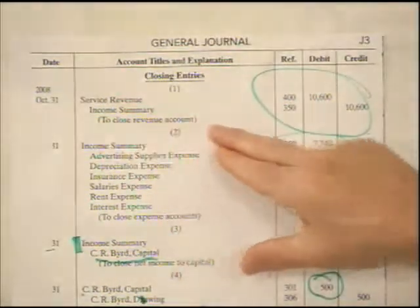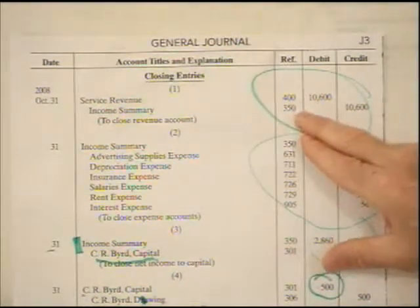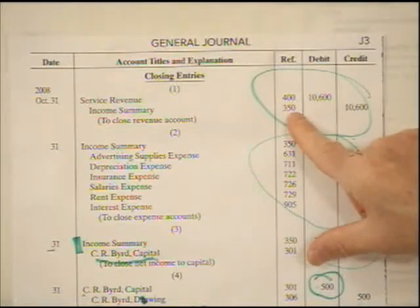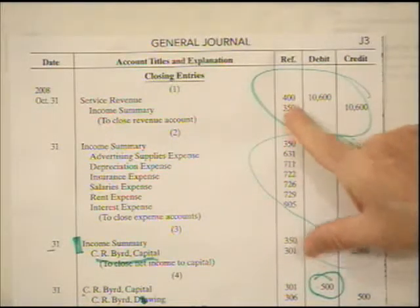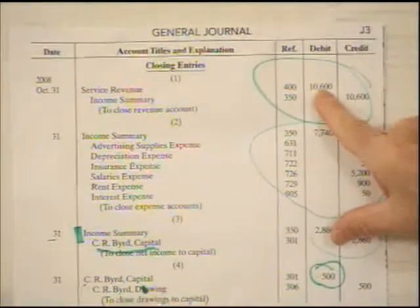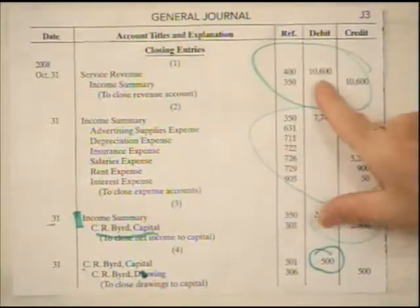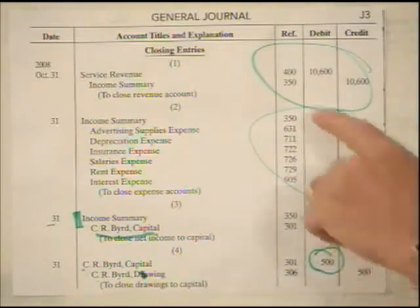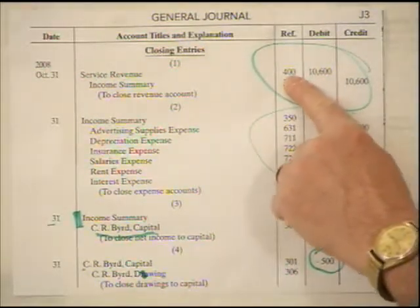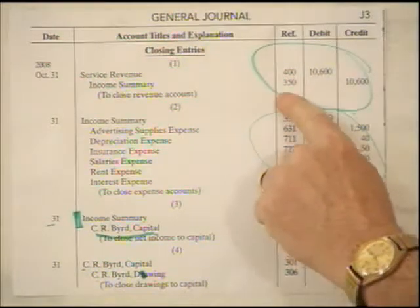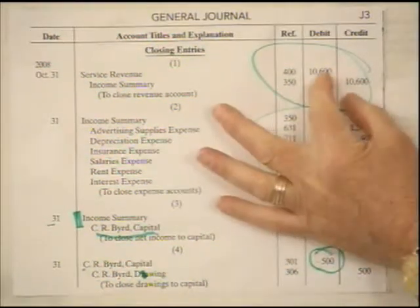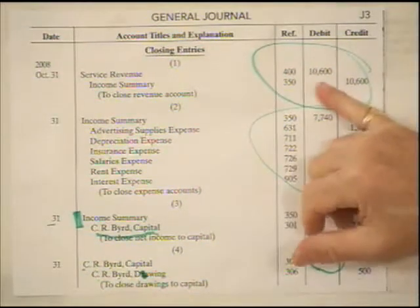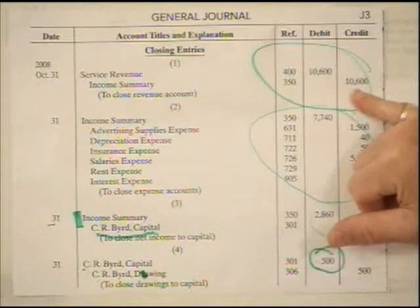These two numbers here are the corresponding general ledger account numbers. Remember, whenever you post a number into the actual general ledger account, as your text shows you, you would come back with a reference to the general ledger account number so that we know we posted. These tell me that these two amounts have been physically posted in the ledger account. So again, we do this entry to turn the service revenue back to zero.